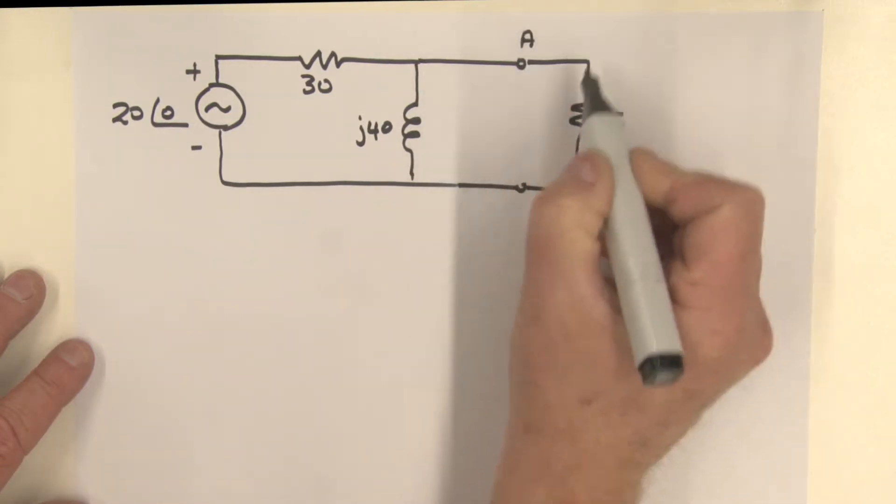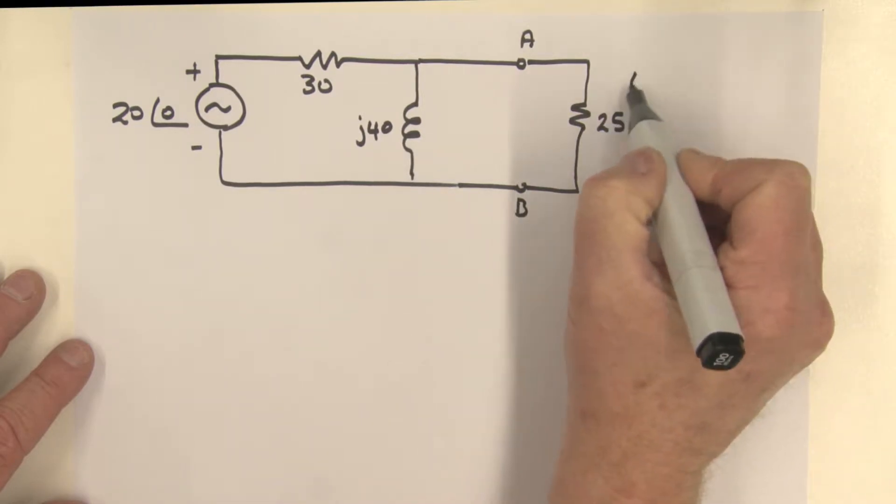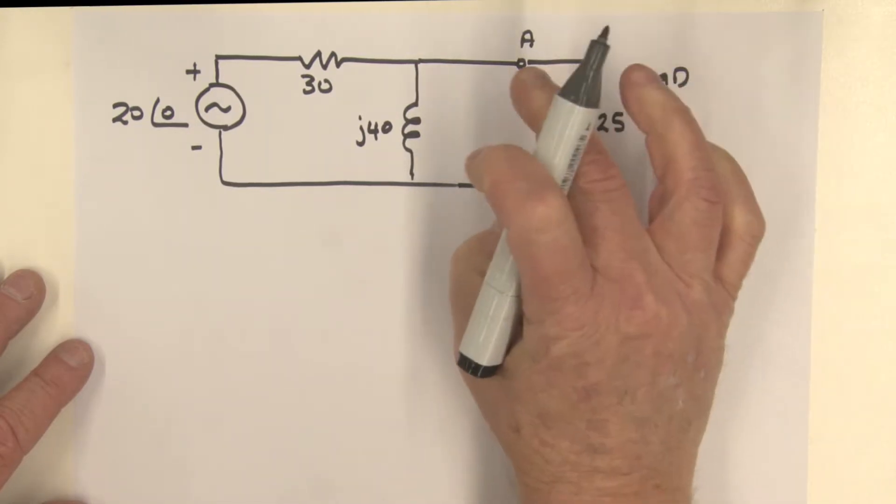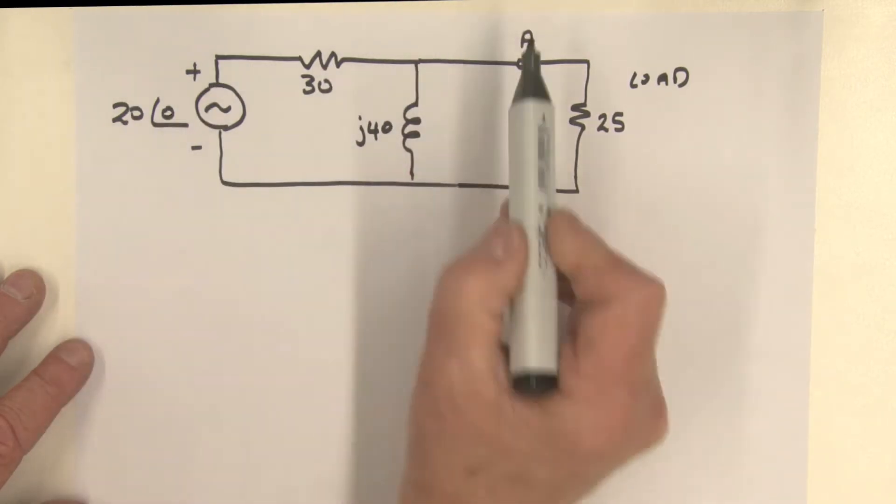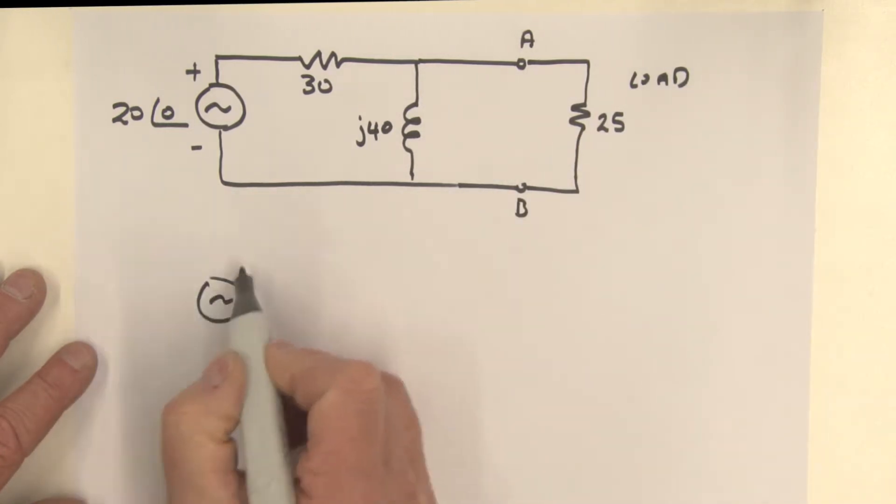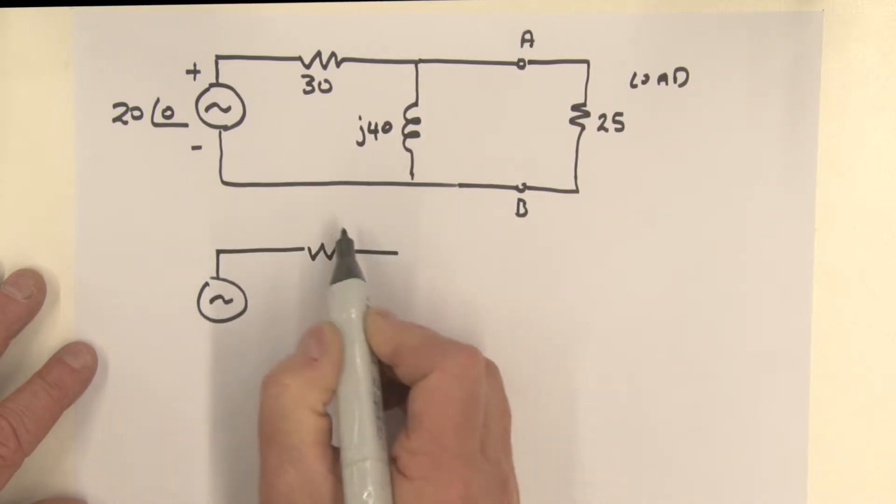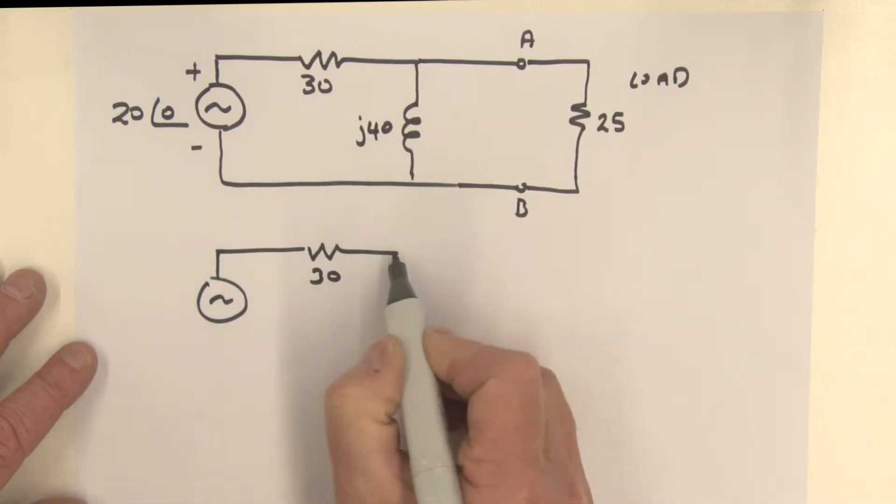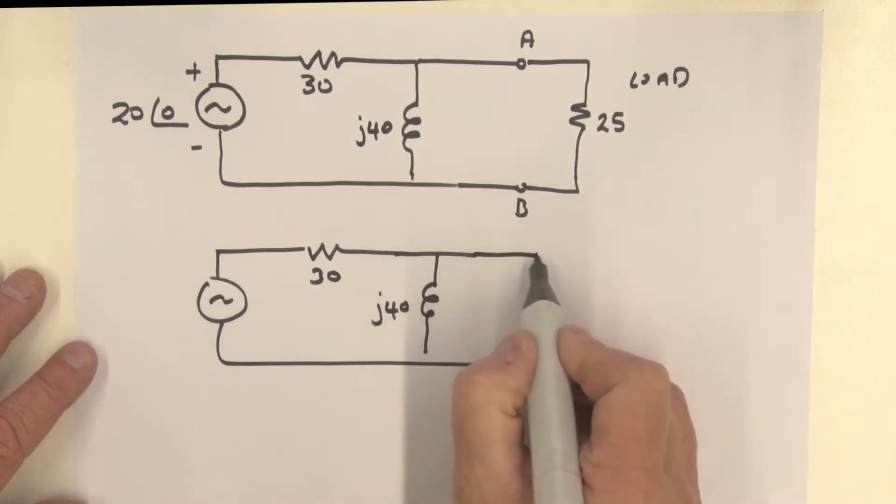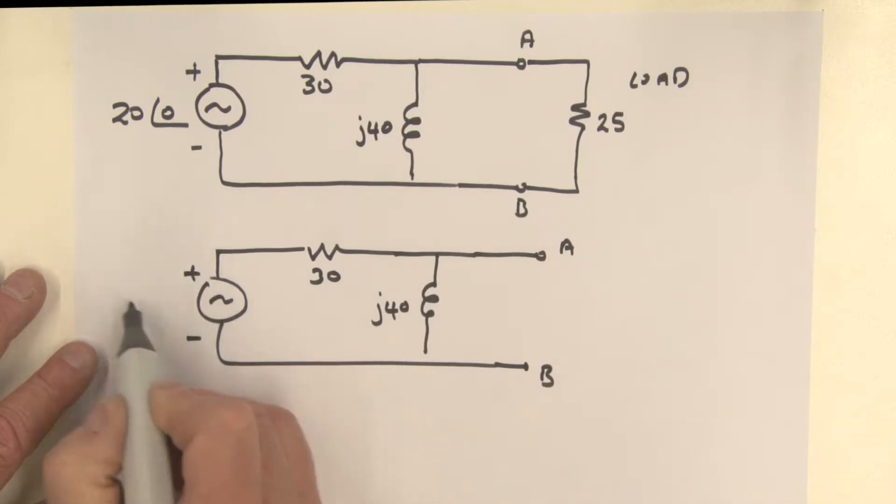What we want to do is Thevenin this circuit. This is going to be our load resistance sitting over here, so we're going to remove that load and Thevenin this part of our circuit. Let's redraw this with the load actually removed, just as we did before. So here's our source, we've got this 30 ohm resistor here, and then the impedance sitting over here which is J40, and here are our terminals A and B. This is our voltage source over here, which is 20 angle zero.